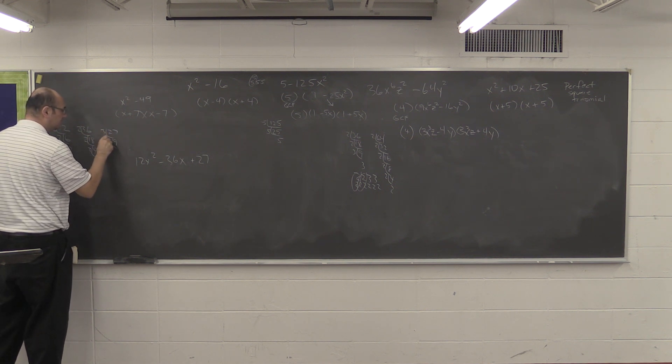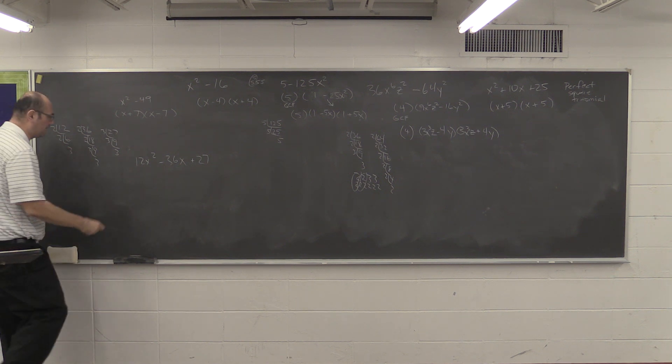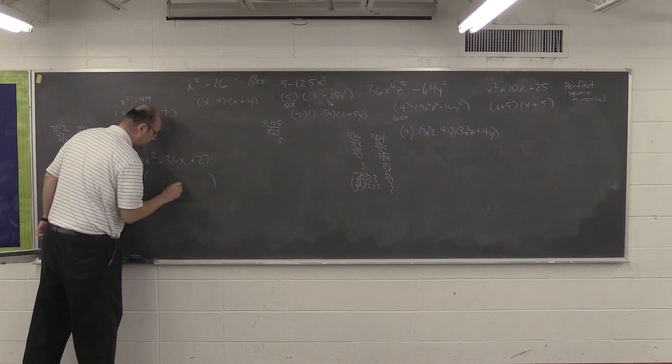27 is going to be 3 times 3 times 3. We only have 3's that are common in all. We only have 1 in this, so basically all we can pull out is a 3. So, that's the greatest common factor.